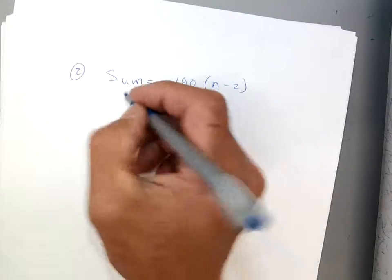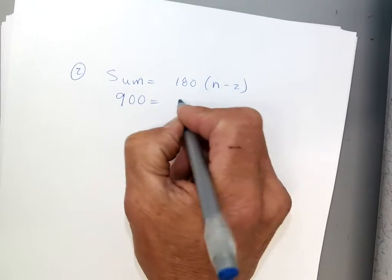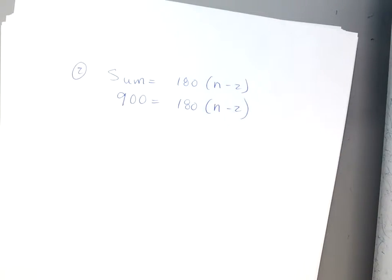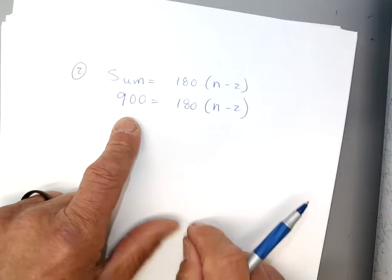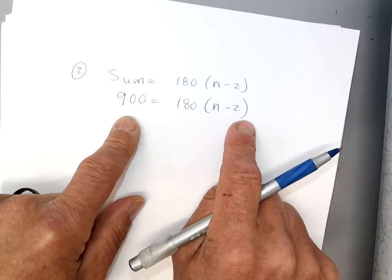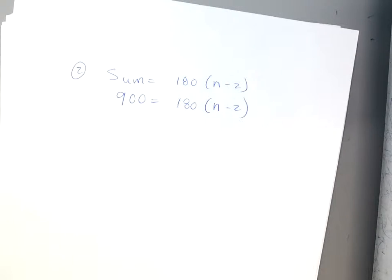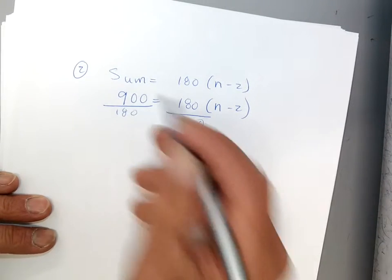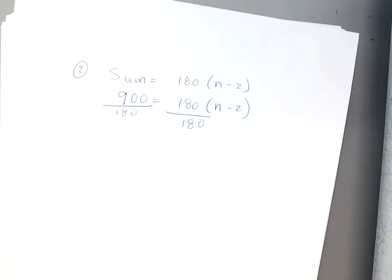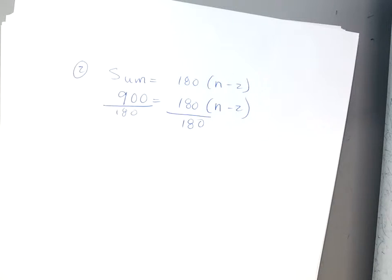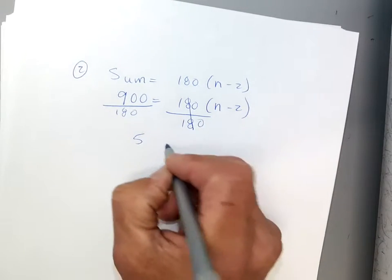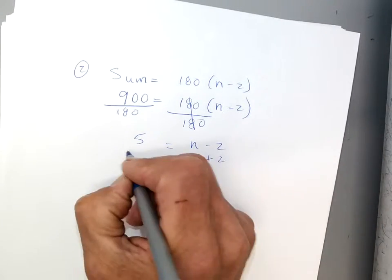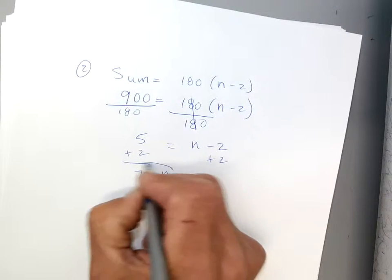So, number two, I'll do it on this piece of paper here so we can see it. So, my formula is the sum is equal to 180 times n minus 2. So, it's just the opposite. I know the sum. The sum is the answer of 900. What I don't know is the how many sides it has, which is the n. So, I'm going to take this formula, so we'll go to 900, and I'm going to solve for n.